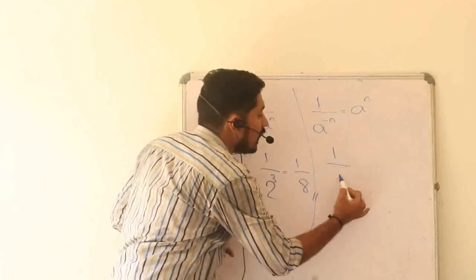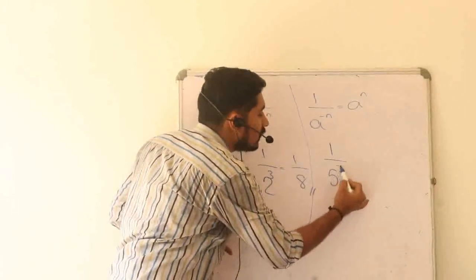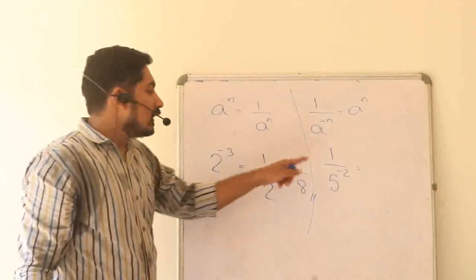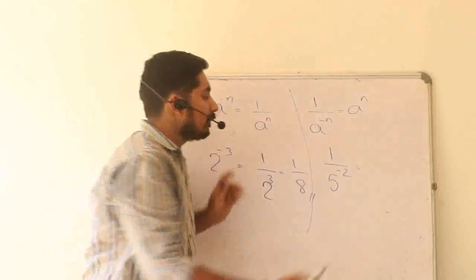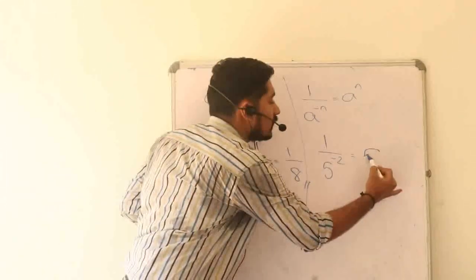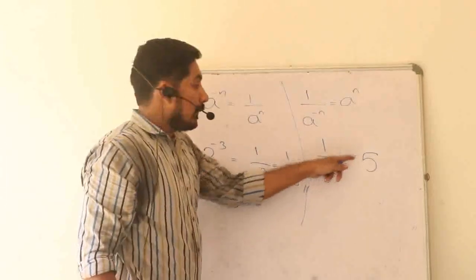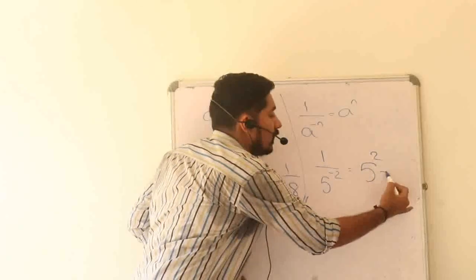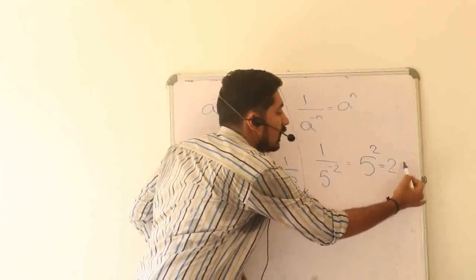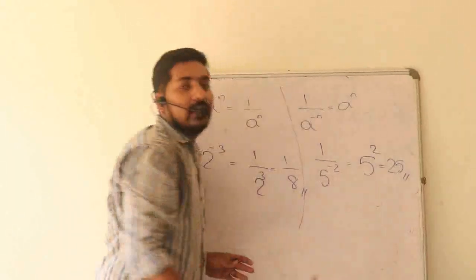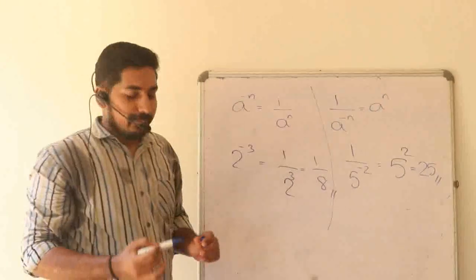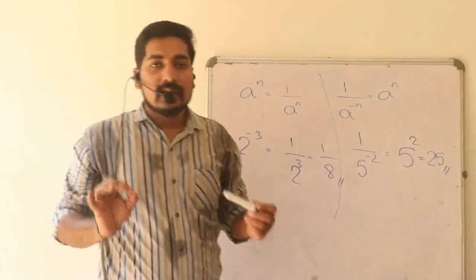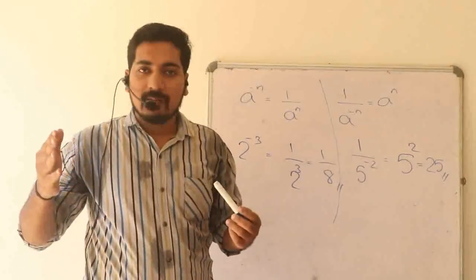Another example: 1 divided by 5 raised to minus 2. Applying the rule, this equals 5 raised to 2, which is 5 into 5, equaling 25.